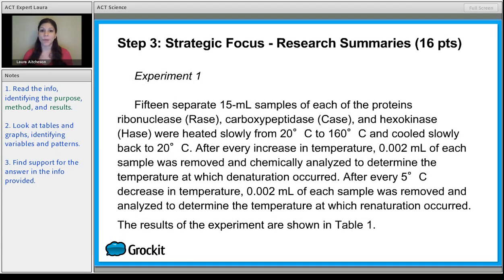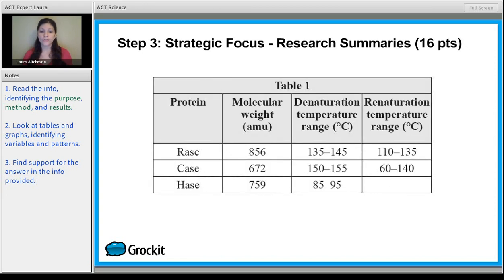Go ahead and pause your video so you can read experiment one. Now that you've read experiment one, you see that we have those three different proteins are race, case, and haste. And you have heating and cooling. And the whole point was to figure out the temperatures at which you have denaturation and renaturation. So taking a look at the table, for race and case, you have particular temperature ranges for both. For haste, it denatures, but it does not renature. So once that protein unfolds, it doesn't come back together again.